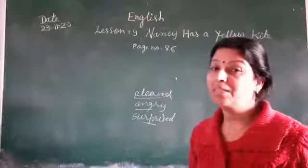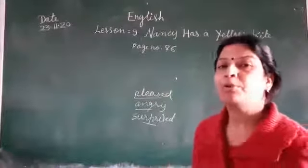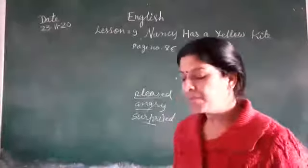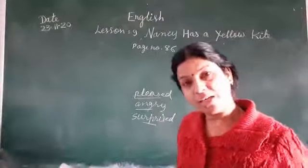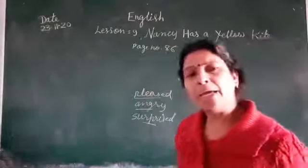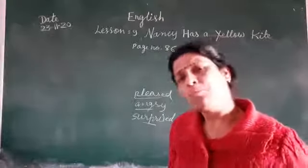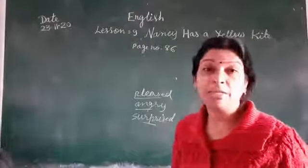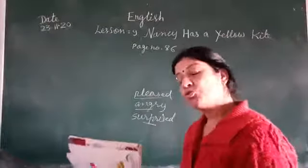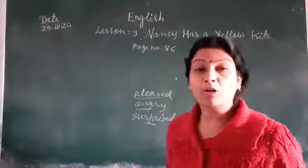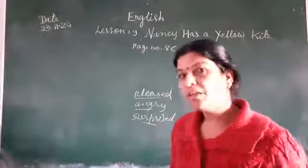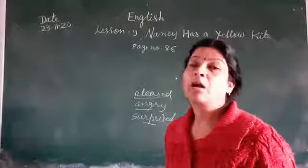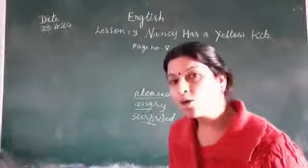What would you like to buy? The shopkeeper is asking the girl: What would you like to buy? I would like a car, please. Here you are. This car is big and red. Yes, it is. How much does it cost? It costs 30 rupees.